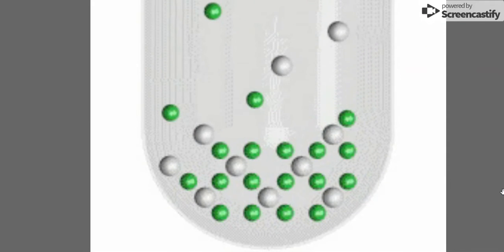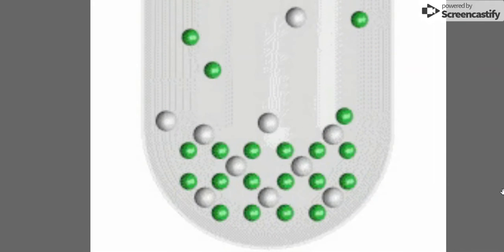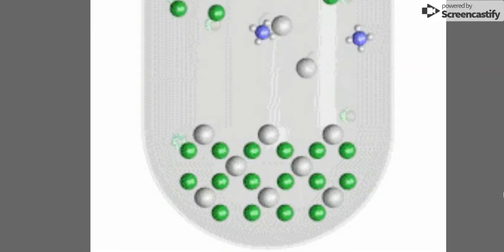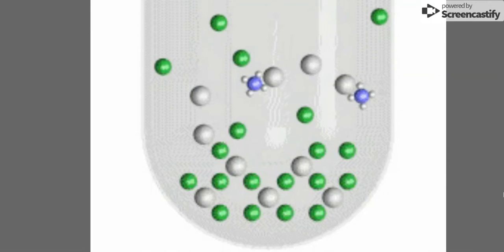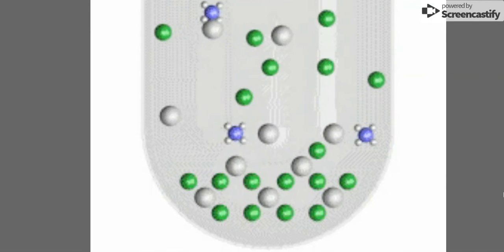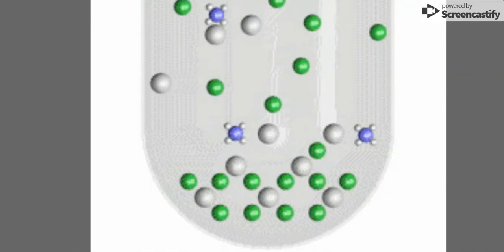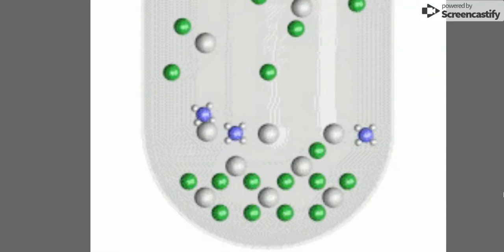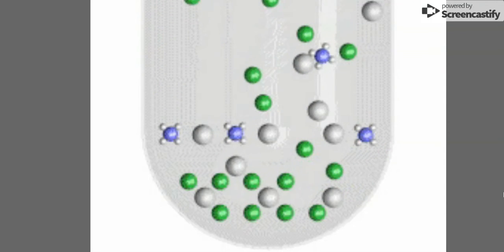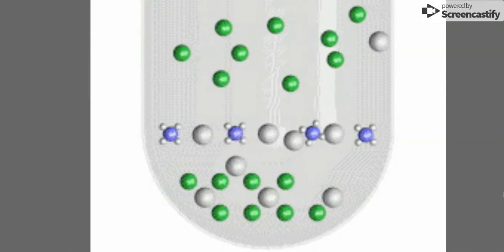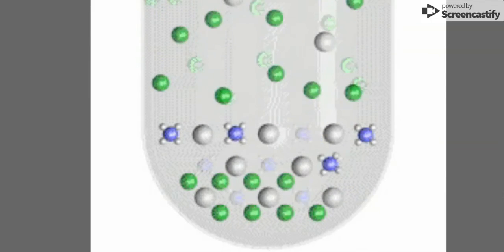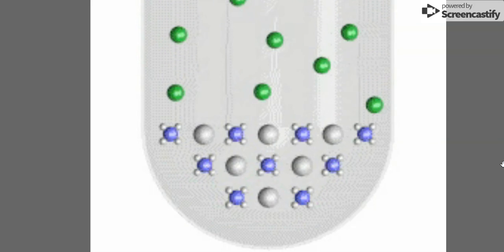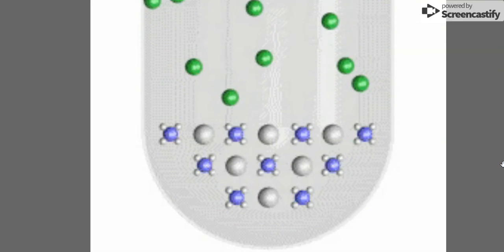When a solution containing chromate ions is added to a saturated solution containing solid white lead chloride, a reaction takes place that converts the lead chloride to solid lead chromate. In the process, chloride ions are released into the solution. Eventually, almost all the lead is converted from the chloride salt to the chromate salt.